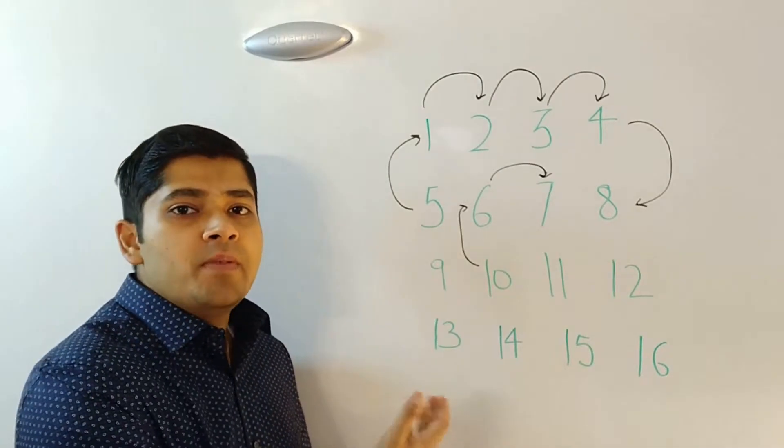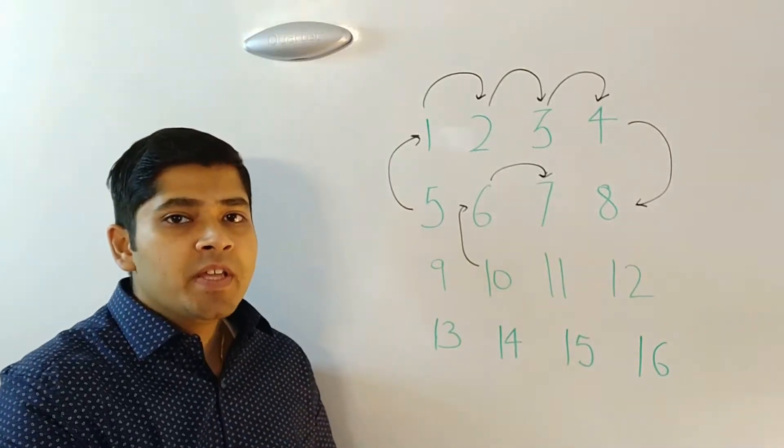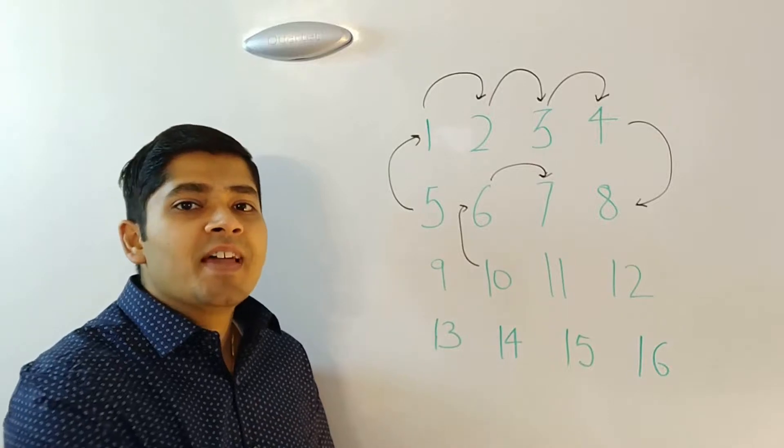So we follow the same process for each and every ring and the number of rings will depend on the size of the matrix.